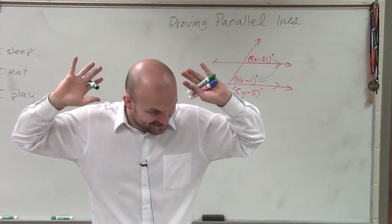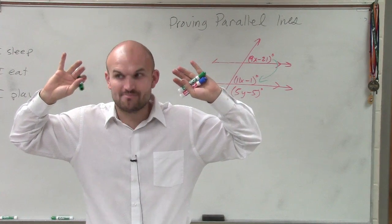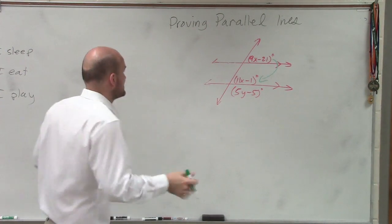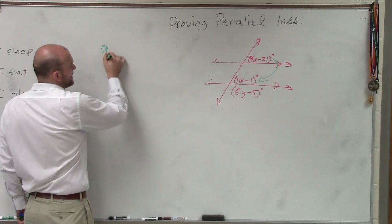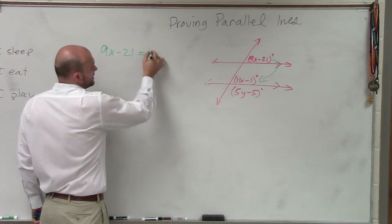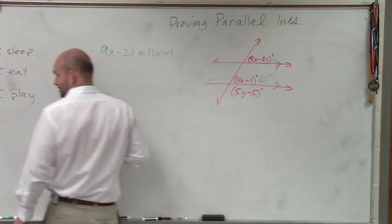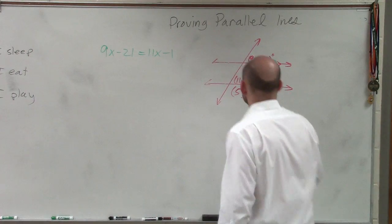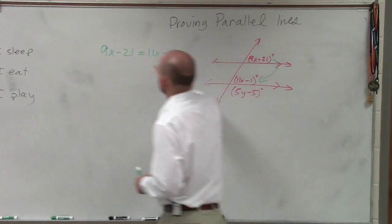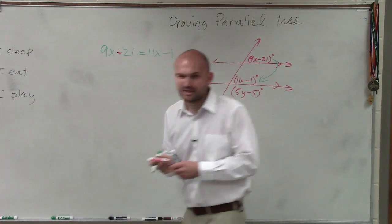Same. Yeah, but their measure is the same, right? The measure of the angles is the same. So therefore, I can now draft up an equation that says 9x minus 21 is equal to 11x minus 1. Oh, it's plus 21? Thank you. Well, that's going to make a difference. Does everybody understand?